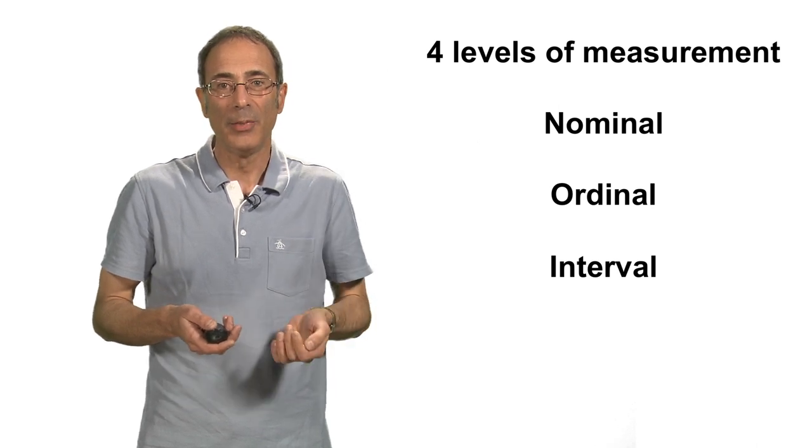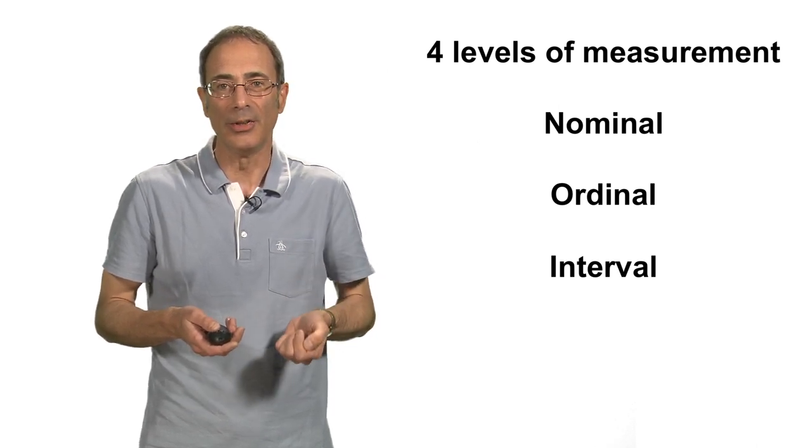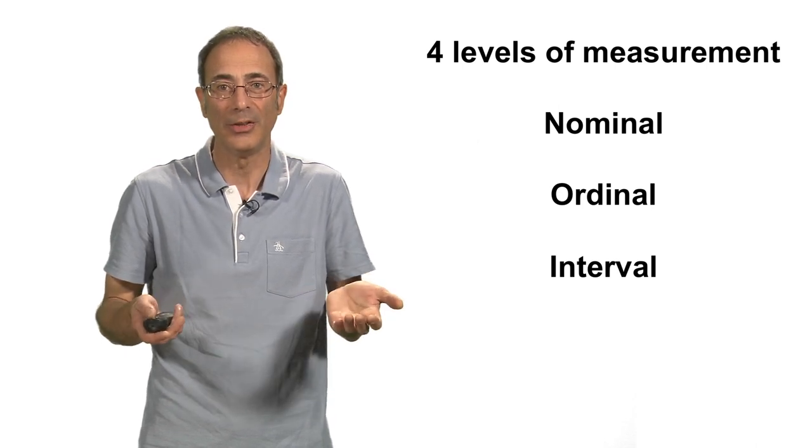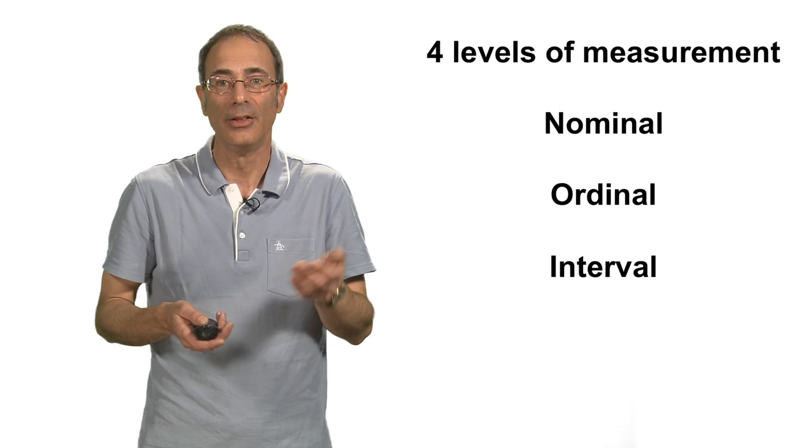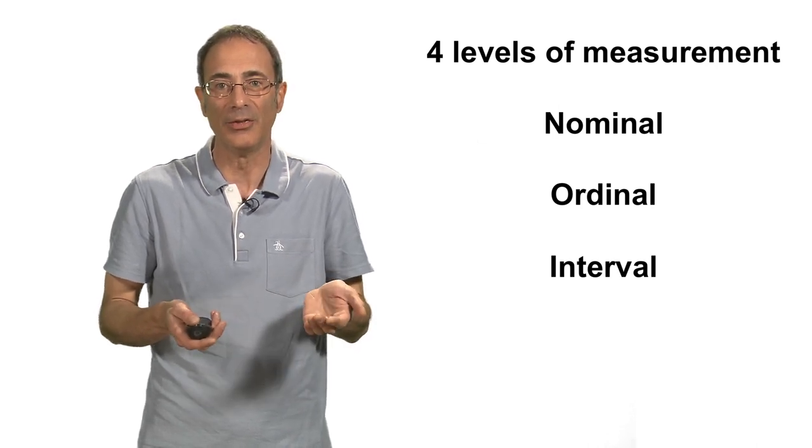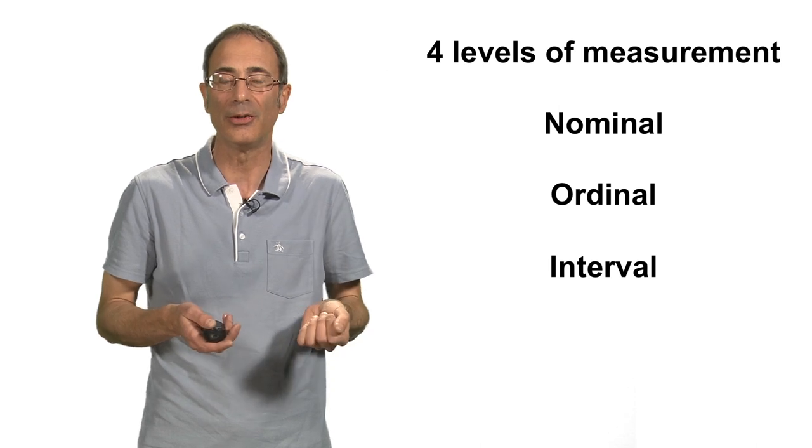So interval measurement can tell you about the relative order between data points, for example, which is the hottest, which is the coldest, and the magnitude of the difference between data points, at least in terms of the equal-sized intervals along the measuring scale. For example, if we measured the average engine oil temperature of racing motorbikes during a race in degrees Celsius.